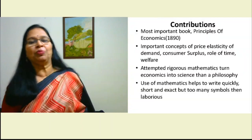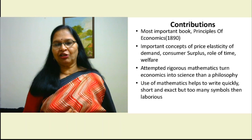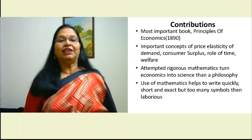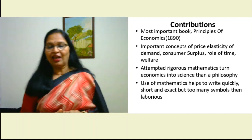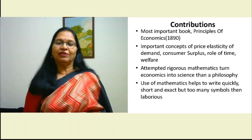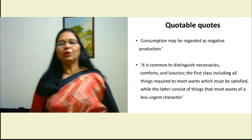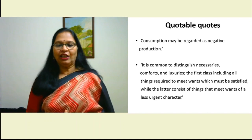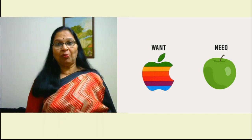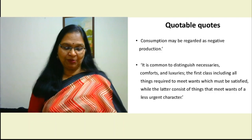Marshall wanted economics to be a subject that describes economic behavior, and he resorted to using mathematics because he felt mathematics is exact, precise, and can explain economic behavior. He wanted to take it away from moral philosophy. In his quotes, Marshall talks about the necessities, comforts, and luxuries of life — words used in commonplace today but introduced for the first time in his writing.